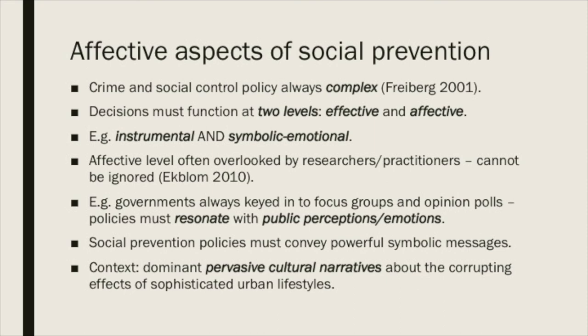Moving on from that public health typology, let's come back to thinking about the affective aspects of social prevention. Crime and social control policy are always complex. Decisions about policy or interventions need to function at two levels: the effective and the affective — or put another way, the instrumental and the symbolic emotional levels. This affective level is often overlooked by researchers and practitioners, but it can't be ignored. The government of the day is always keyed in to what focus groups and opinion polls are telling them, so policies need to resonate with public perceptions and emotions.